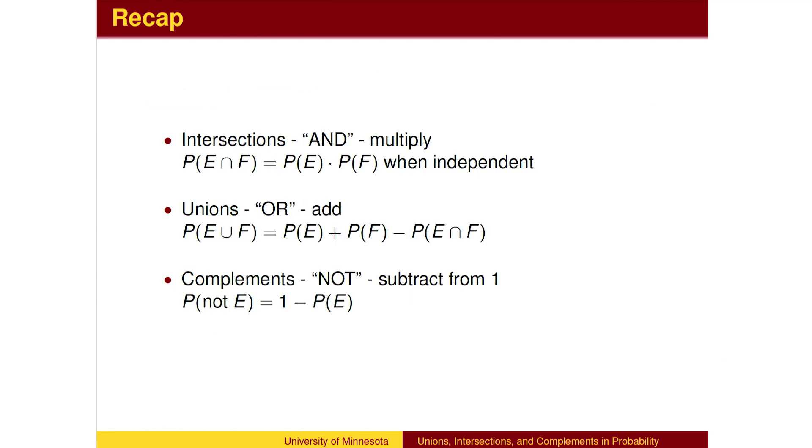To recap, to combine probabilities using AND, we multiply the probabilities. The phrase BOTH E AND F means E AND F. To combine probabilities using OR, we add the probabilities, subtracting the overlap if they are not mutually exclusive. The word NOT finds the remaining probability, so that the two parts add to 100%.